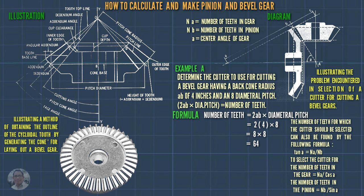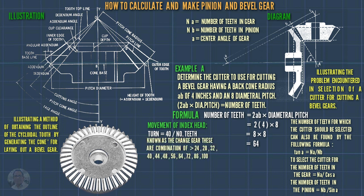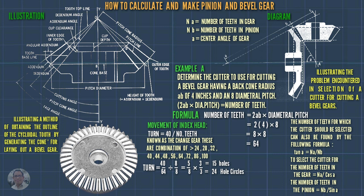We proceed to the index head formula: turns equals 40 divided by number of teeth. The change gears are combinations of 24, 28, 32, 40, 44, 48, 56, 64, 72, 86, and 100. So: 40 divided by 8 equals 5.